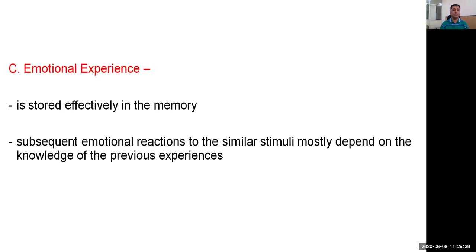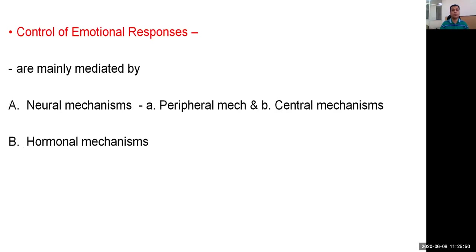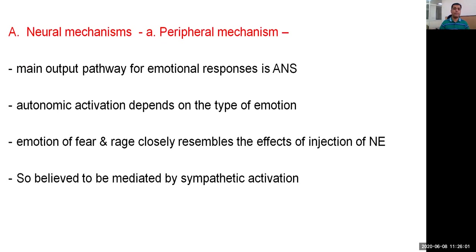Emotional experience is stored effectively in the body, and subsequent emotional reactions to similar stimuli mostly depend on knowledge of previous experiences. Control of emotional responses is mainly mediated by neural and hormonal mechanisms. The neural mechanism has peripheral and central components. The main output pathway for emotional responses in the peripheral component is the autonomic nervous system. Autonomic activation depends on the type of emotion — fear and rage closely resemble the effects of norepinephrine injection and are believed to be mediated by the sympathetic system.